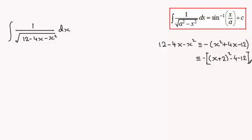And then what I've got is, if I expand this, minus x plus 2 all squared, and then minus 4 minus 12 is minus 16, and then this minus out here gives us plus 16.